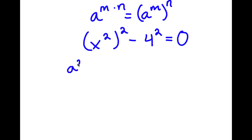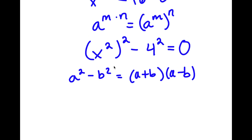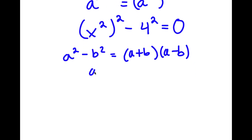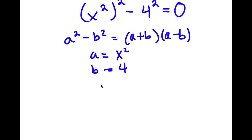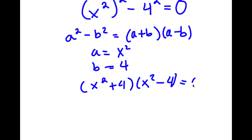Now if I have something in the form a² minus b², this is equal to a plus b times a minus b. So in this case, a is x² and b is 4. So now I have x² plus 4 times x² minus 4 is equal to 0.